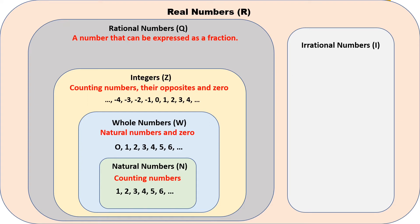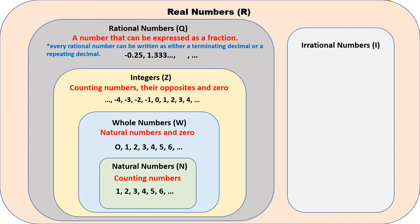Now, rational numbers, or Q — a number that can be expressed as a fraction. Every rational number can be written as either a terminating decimal or a repeating decimal. Examples include negative 0.25, 1.3333..., and one over two.